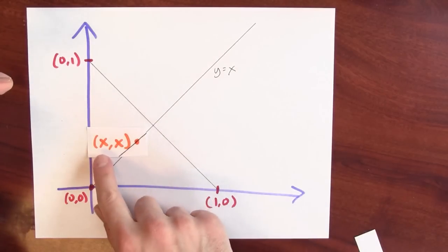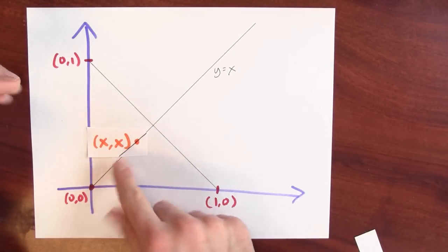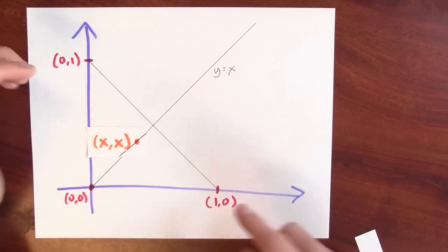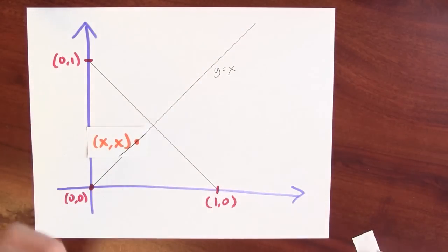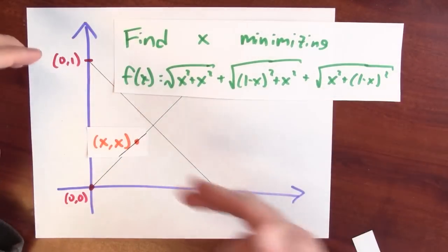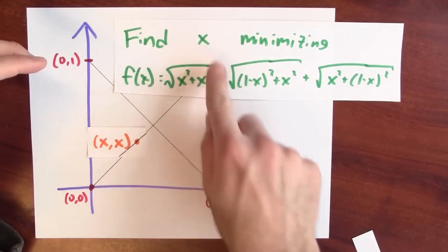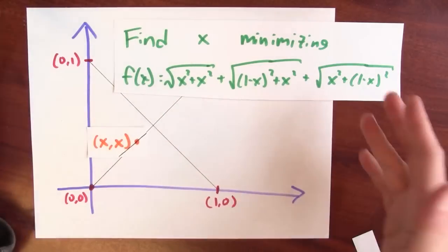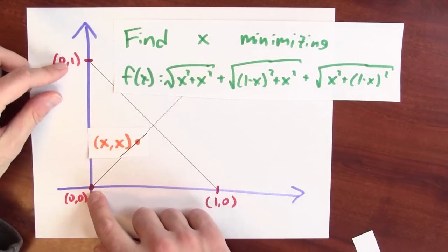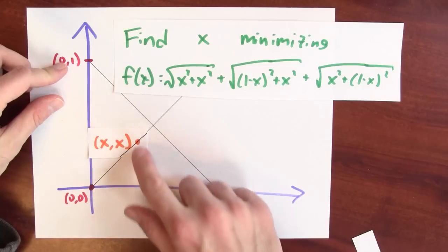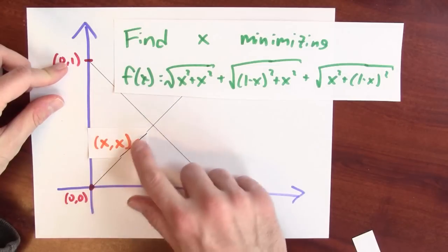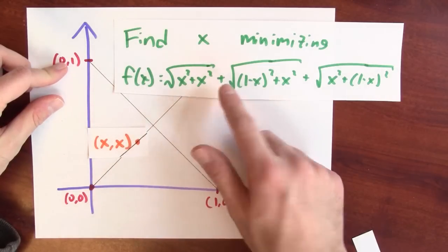So I'm trying to find the value of x so that the point (x, x) minimizes the sum of the distances to the three vertices. Here's a formula for the sum of the distances. This first part, the square root of x squared plus x squared, is just the Pythagorean theorem — the distance from (x,x) to (0,0). Here's a right triangle whose two legs both have length x, so the hypotenuse is the square root of x squared plus x squared.